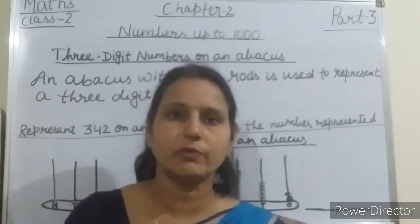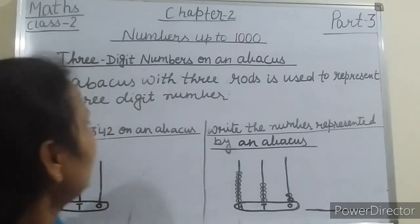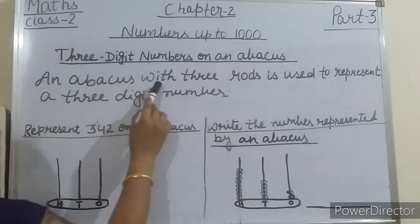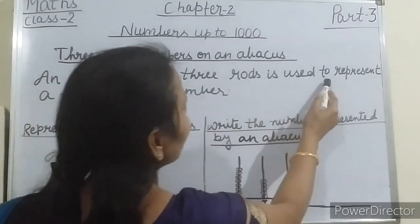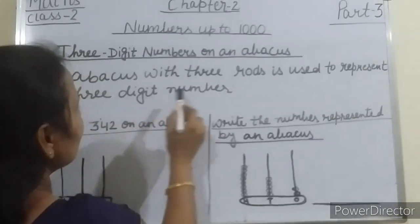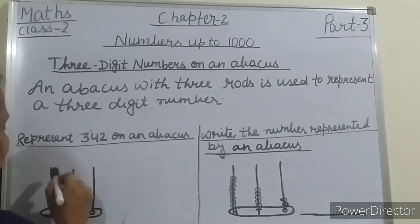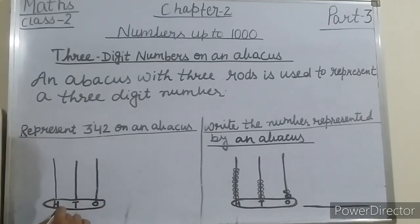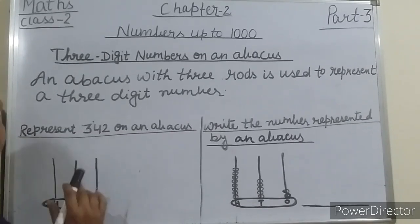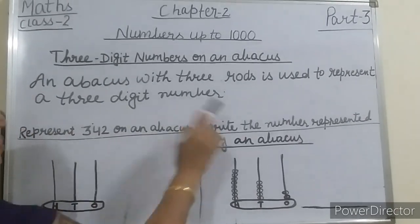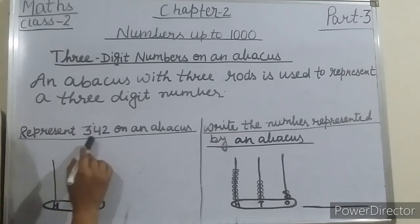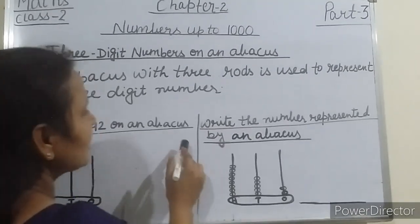So students, any problem? Now students, we will start three-digit numbers on an abacus. An abacus with three rods is used to represent a three-digit number. Three rods: one, two, three — hundreds, tens, ones. I am giving you two examples. First example: represent 342 on an abacus.